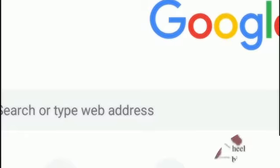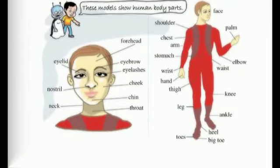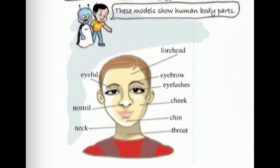Akshay shows Nojo some charts which show human body parts. For example: forehead, eyebrow, eyelid, eyelash, nostril, cheek, chin, neck, throat.